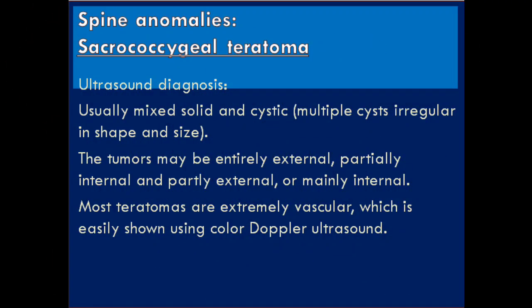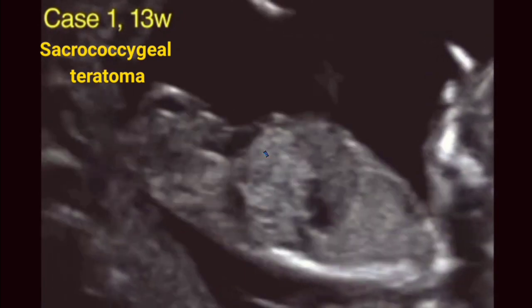The next abnormality is sacrococcygeal teratoma — ultrasound diagnosis. It usually appears as a mixed solid and cystic mass with multiple cysts, irregular in shape and size. The tumor may be entirely external, partially internal and partly external, or mainly internal. Most teratomas are extremely vascular, which is easily shown using color Doppler ultrasound.